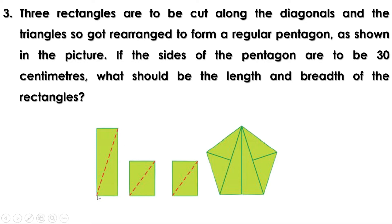This rectangle is cut along the diagonal and the triangles are placed here. This triangle is placed here and this triangle is flipped and placed here. Similarly, these rectangles are cut along the diagonals and the triangles are placed here and another pair of triangles are placed here. This is the length and breadth of the rectangle. This is the length of the large rectangle and this is the breadth. Similarly, this is the length and breadth of the small rectangle. Also, you can see that these two triangles are equal because they are triangles obtained from the rectangle by cutting it along the diagonal.